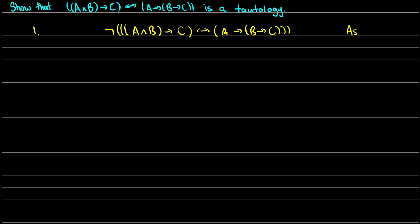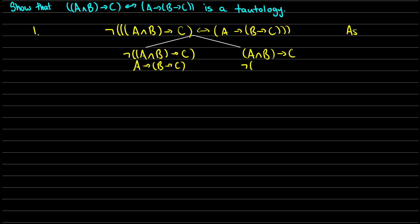We're going to have branching paths here, and this might get a bit long. On the left side, it's going to be one of those true and one false, or vice versa. On the left side, let's assume the left is false, so we'll get 'not-(a and b arrow c)' and also 'a arrow (b arrow c)'. On the right side, we'll assume 'a and b arrow c' is true and 'not-(a arrow (b arrow c))' is false. This is line 2 and line 3, from line 1, not-biconditional decomposition.